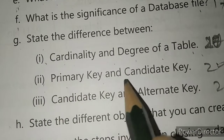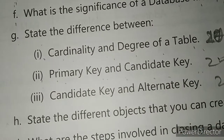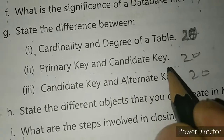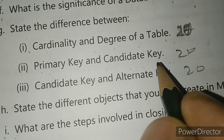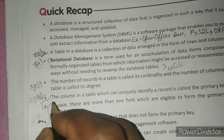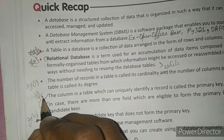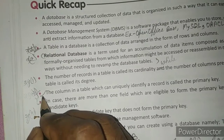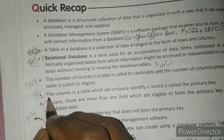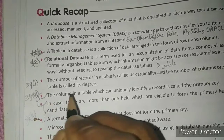The second part is the difference between primary key and candidate key. Write the heading: 'Difference between Primary Key and Candidate Key'. The content comes from page number 20 in the quick recap, under point six.